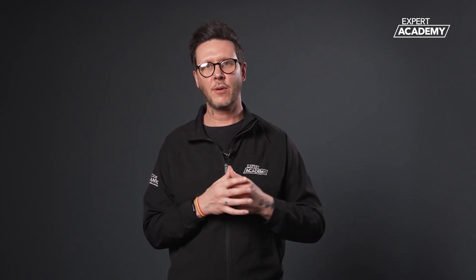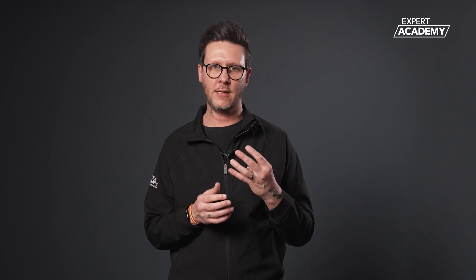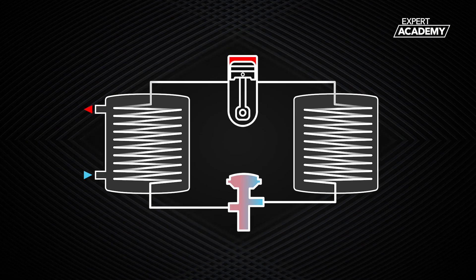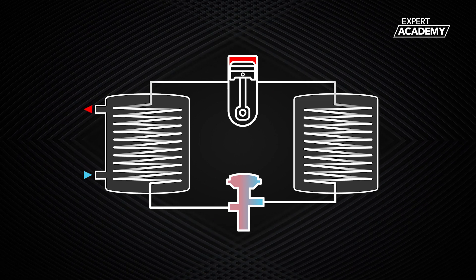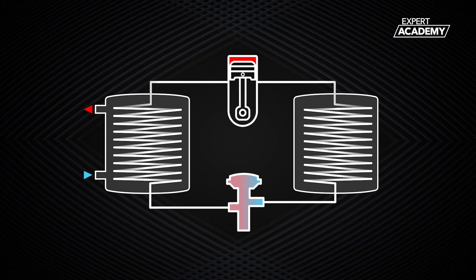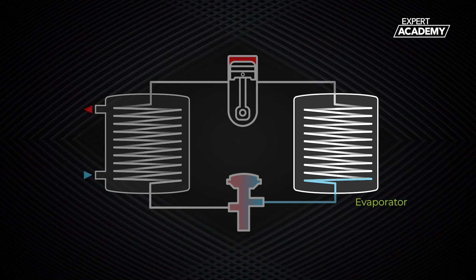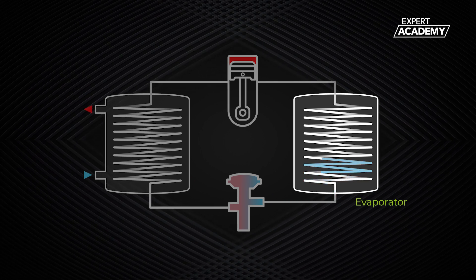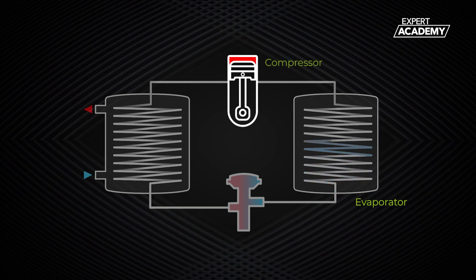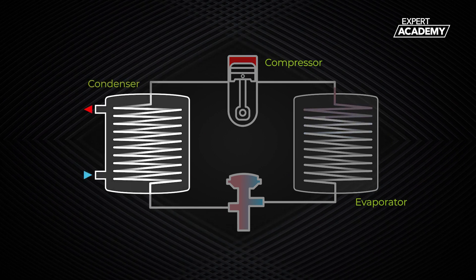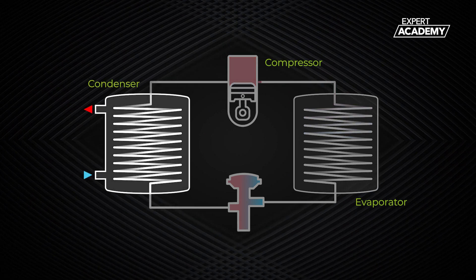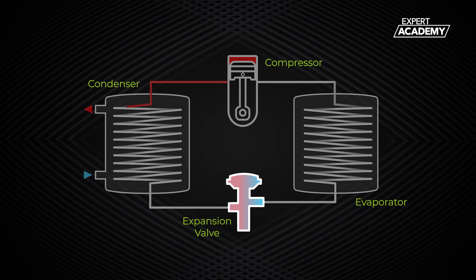It is easier to understand if we divide the vapor compression cycle into four stages, each corresponding to the relevant part within the heat pump. These four stages and their corresponding parts are: number one, evaporation at the evaporator; number two, compression at the compressor; three, condensing at the condenser; and four, expansion at the expansion valve.